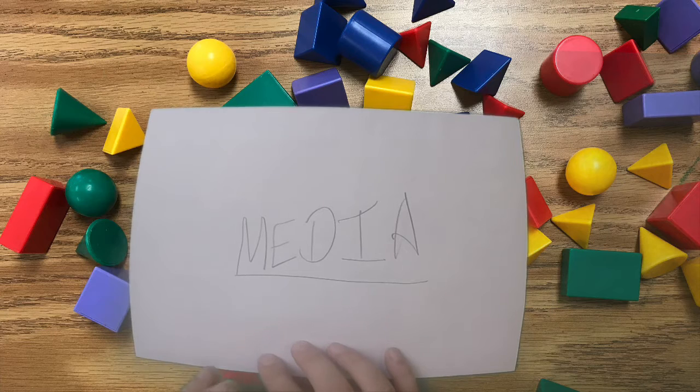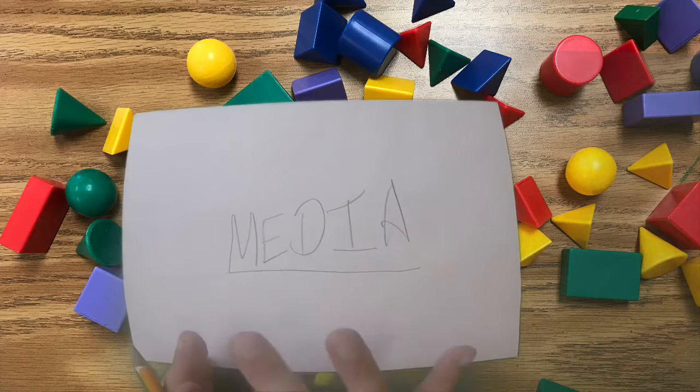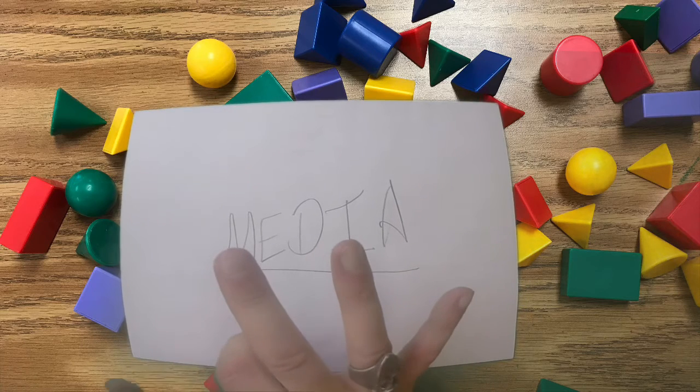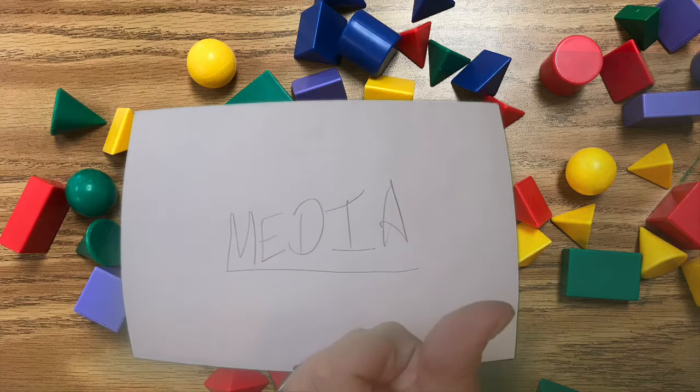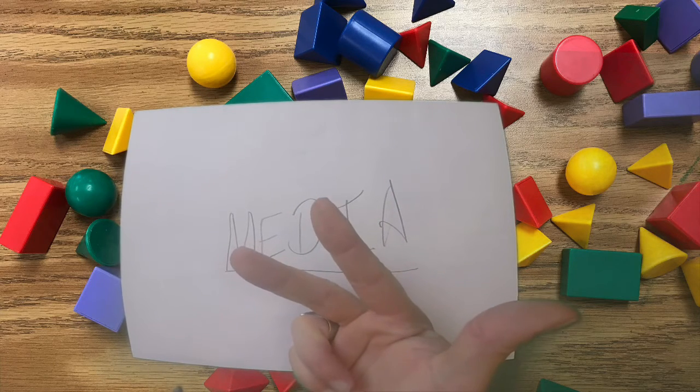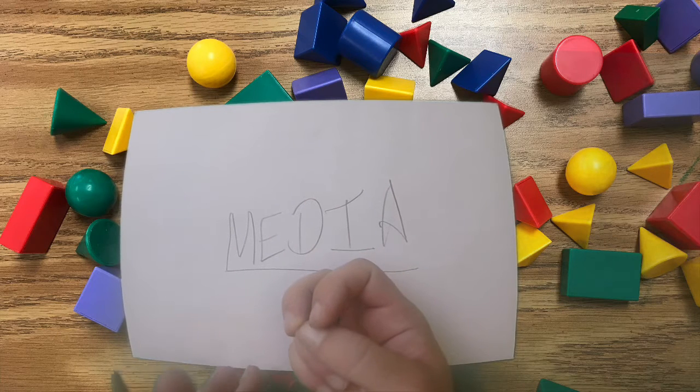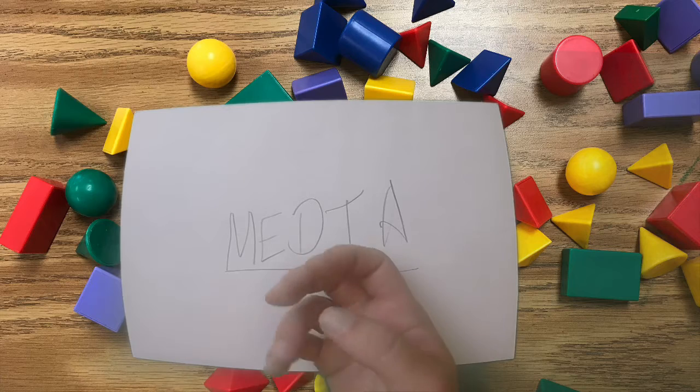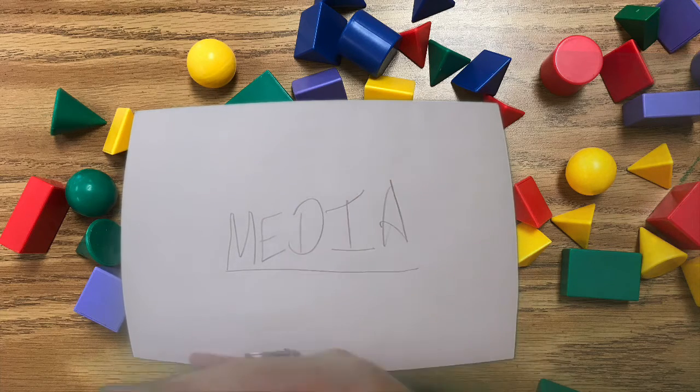Media is anything that we can make a mark with. There are three things that you can do with media. So the media has to be able to do one of these things. You have to be able to write, draw, or color with it. If you can write with it, draw with it, or color with it, then it is media. If you cannot write, draw, or color with it, it is not media.